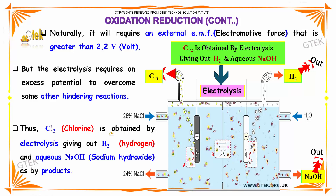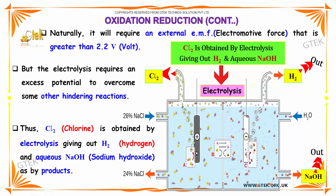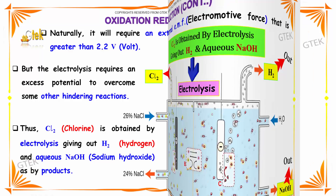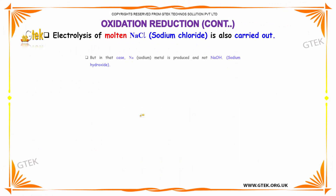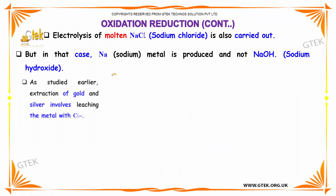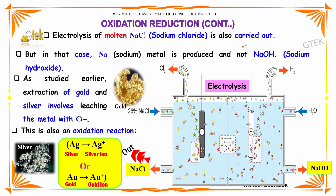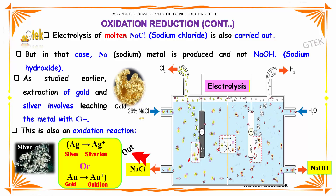Chlorine is obtained by electrolysis giving out hydrogen and aqueous sodium hydroxide as byproducts. Electrolysis of molten sodium chloride is also carried out, but in that case sodium metal is produced and not sodium hydroxide.